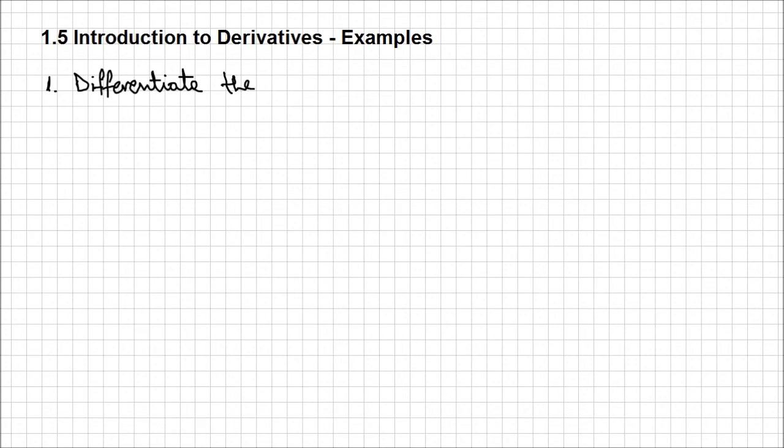This first example: I'm going to differentiate the function f of x which is equal to 1 over x, provided that x is different than 0. This is a simple quotient, but from my experience too many students still struggle working with fractions. We can't have that at this level anymore, so to ensure that everybody's up to speed for the lessons to come, I decided to include this example as well.